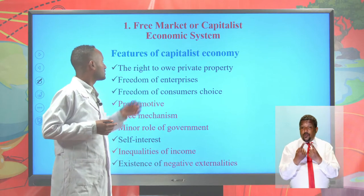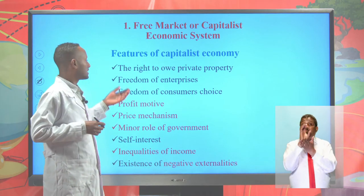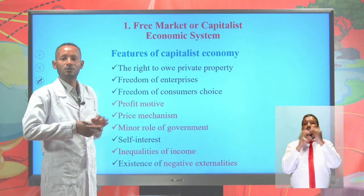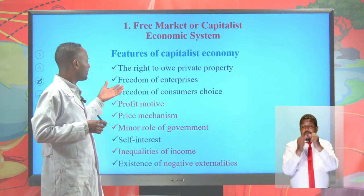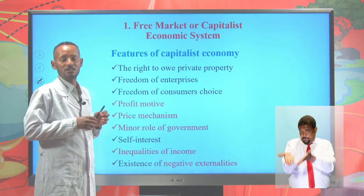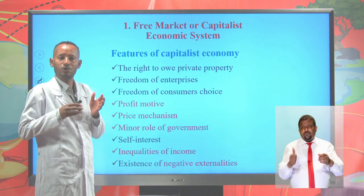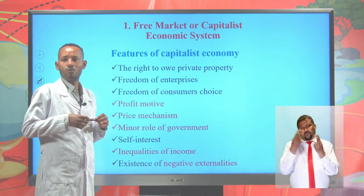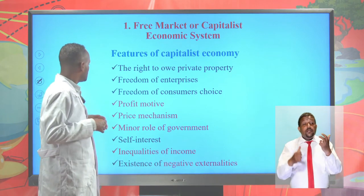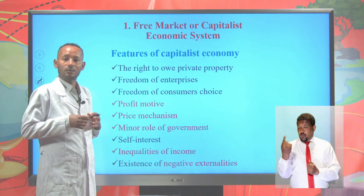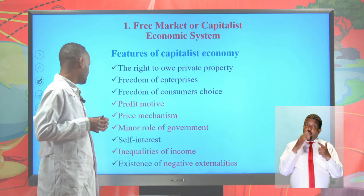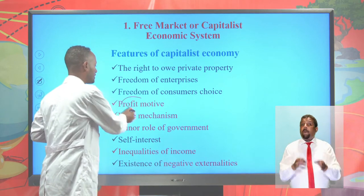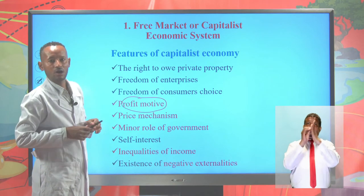The features of the free market or capitalist economic system include: first, the right to own private property — individuals have the right to accumulate wealth. There is no ceiling on capital. Another feature is freedom of enterprise — everybody can produce whatever they want. There is also freedom of consumer choice — consumers can buy whatever they want. Another feature is profit motive — individuals can earn profit, which enables more production and leads to efficiency and increased productivity for entrepreneurs.